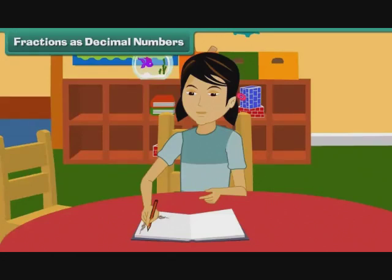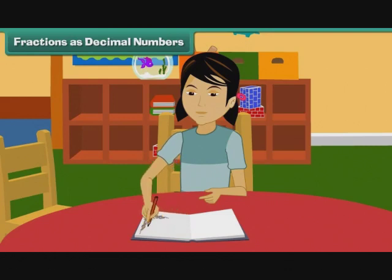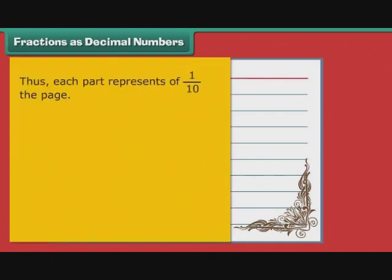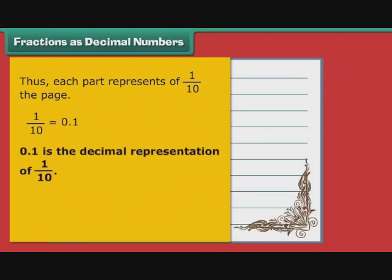Fractions as Decimal Numbers. Arpita is busy decorating the pages of her personal diary. The lines on a page of her diary divide the page into 10 equal parts. Thus, each part represents 1 by 10 of the page. 1 by 10 can also be written as 0.1. Therefore, we can say that 0.1 is the decimal representation of 1 by 10.